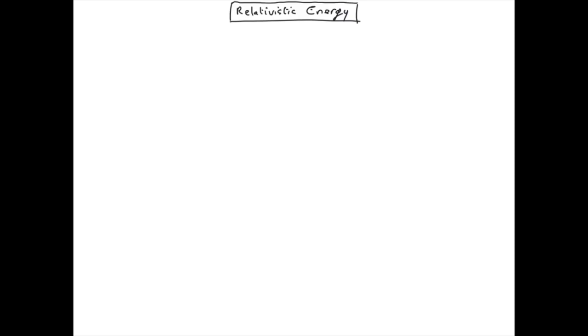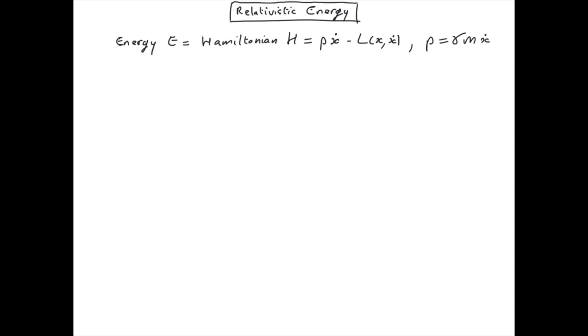Now that we have the relativistic Lagrangian, we have already calculated the relativistic momentum from it and we can now calculate the relativistic energy using the definition of the Hamiltonian. The relativistic Lagrangian is minus mc² divided by gamma, so this gives the Hamiltonian equal to...